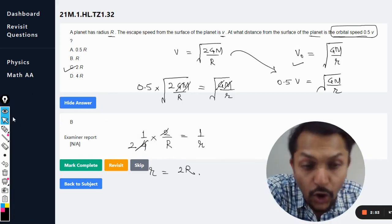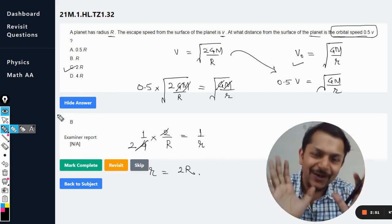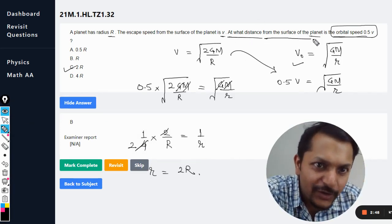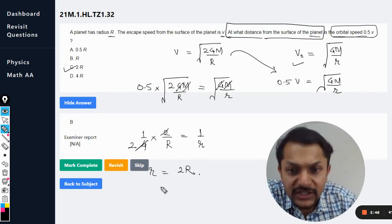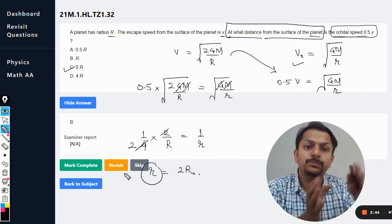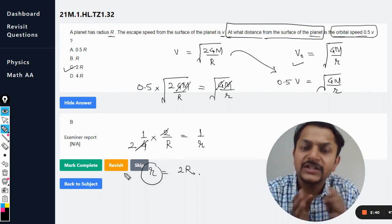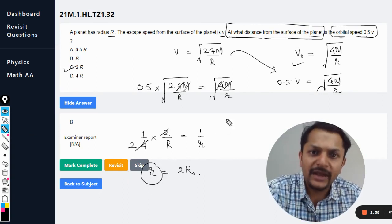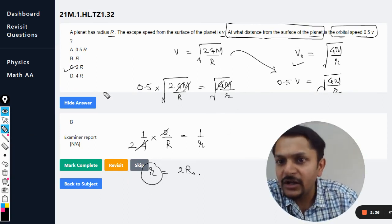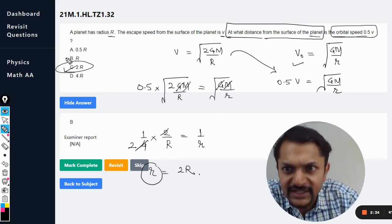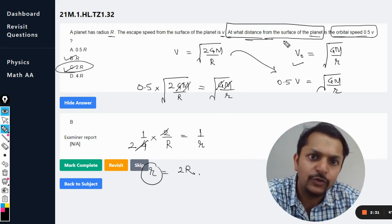At what distance... oh okay, I'm sorry, I was highly confused here. At what distance from the surface of the planet? So this is the distance of the satellite from the center of the planet. You have to subtract R, so this is the total distance and B will be the answer.